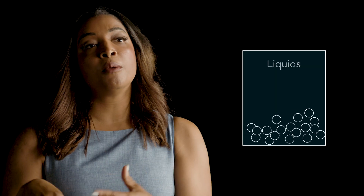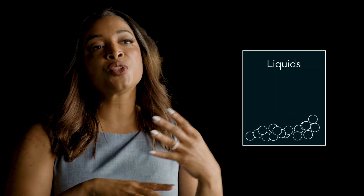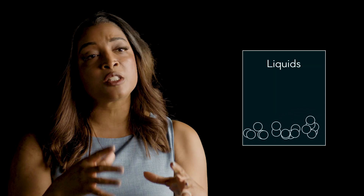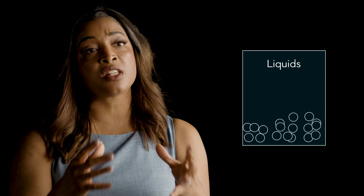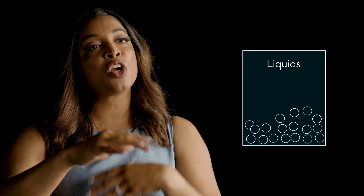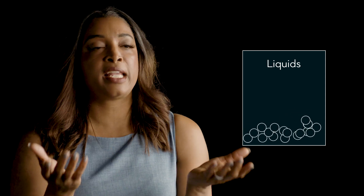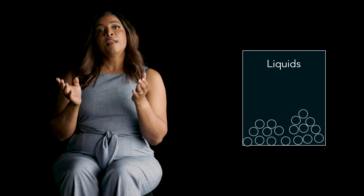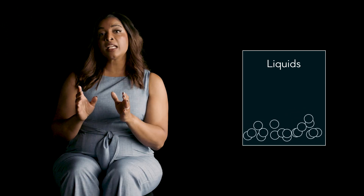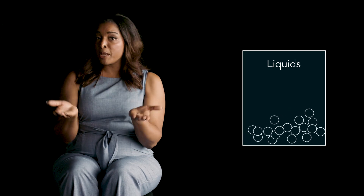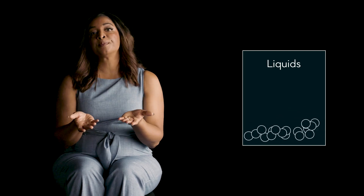If you increase the temperature, a liquid can be formed. The particles will start to have enough energy to free themselves from the fixed positions of a solid and start rolling on top of each other, just like in a ball pit. This in turn explains why liquids can flow and take the shape of their container.